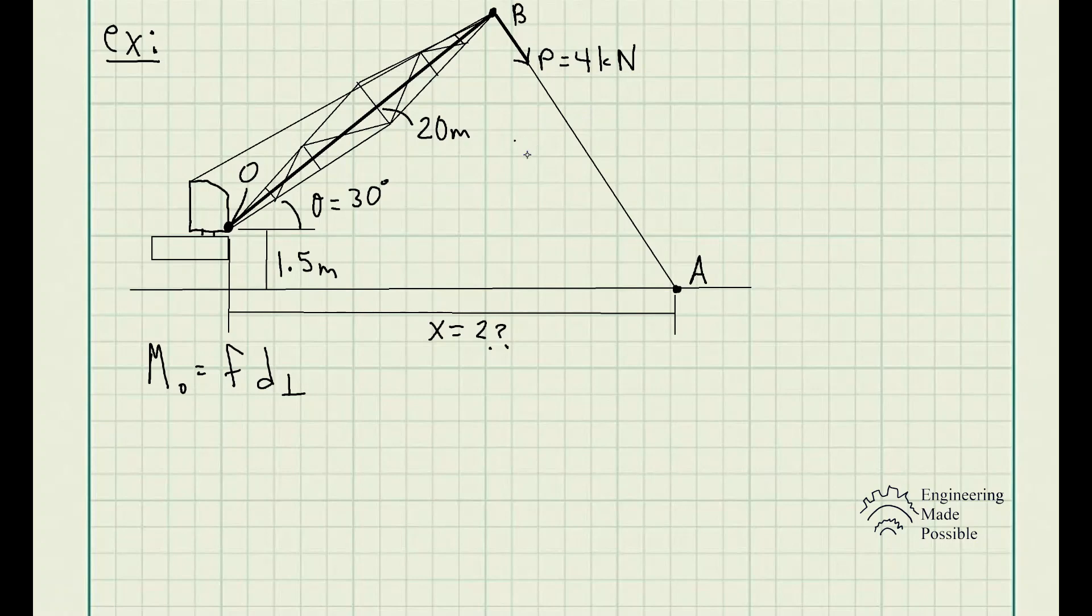We know we can't change the distance that's perpendicular because it's fixed at 20 meters, as you can see here. But what we can do to maximize the moment is to keep this angle at 90 degrees. This is where it will maximize the moment because we won't have to split up this 4 kN into its X and Y component, and only one of them will be causing a moment.